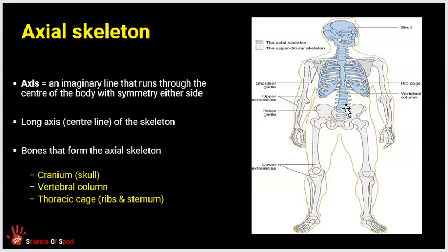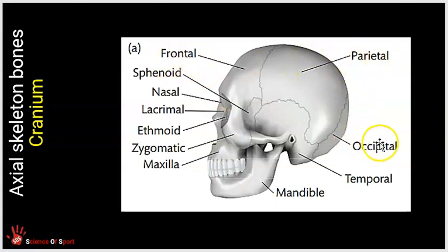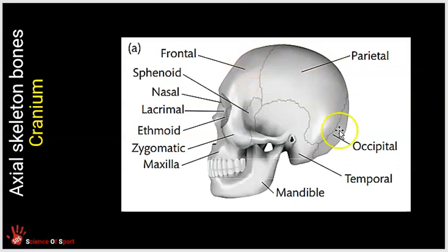Looking specifically at the cranium, here's a close-up. You will not need to name all of these bones, but it would be good to learn one — perhaps the frontal bone, the parietal bone, or the occipital bone. The cranial bones are flat bones, which is a good example for another question. The cranium is made up of a series of fused flat bones joined together in an immovable joint.